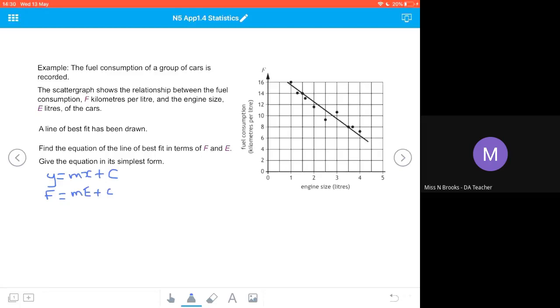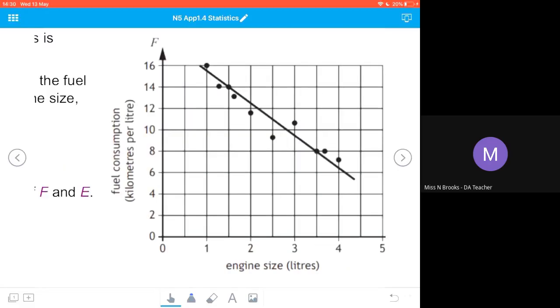Now we need to work out the gradient of that line. If we zoom in on our graph, we identify two points on our Cartesian grid. We've got one point at 1.5, 14 and another point at 3.5, 8.